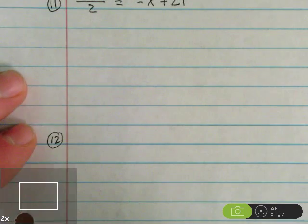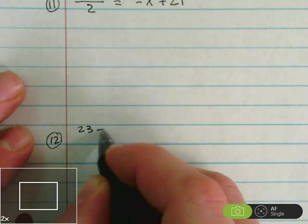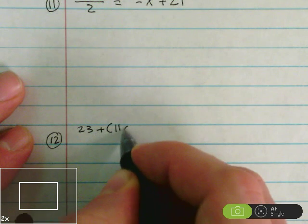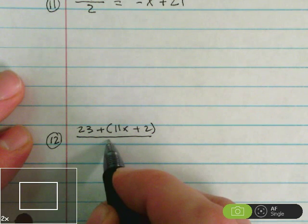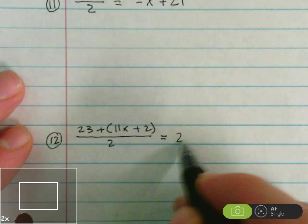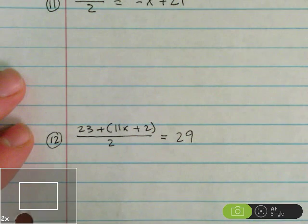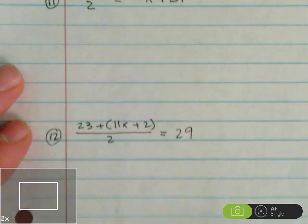So 23 plus 11x plus 2 divided by 2 equals 29. We have 23 plus 11x plus 2 divided by 2 equals 29. And then we're going to take a look at number 13.